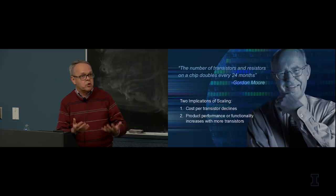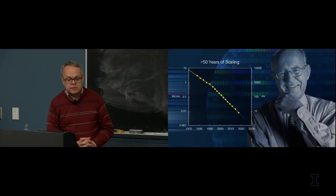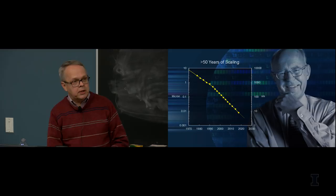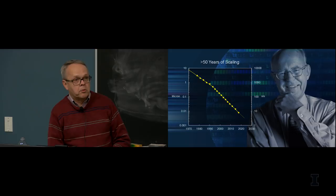This is Intel's trend in scaling minimum feature size since the early 1970s. There was an inflection point around the mid-1990s when instead of scaling transistor density by 0.7x every three years, we started to accelerate the pace and have been scaling feature size by about 0.7x every two years. We do that to achieve improved performance, lower cost, and also lower power.